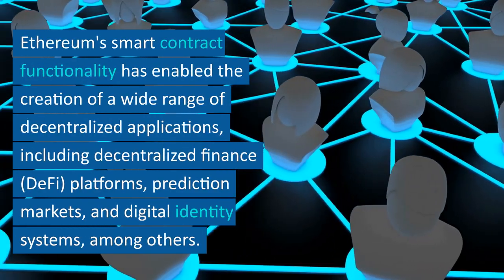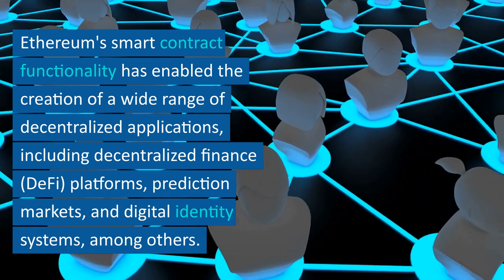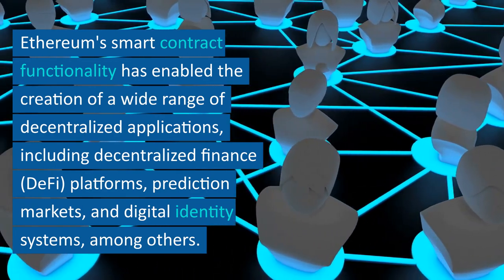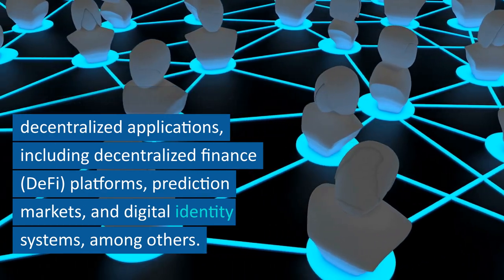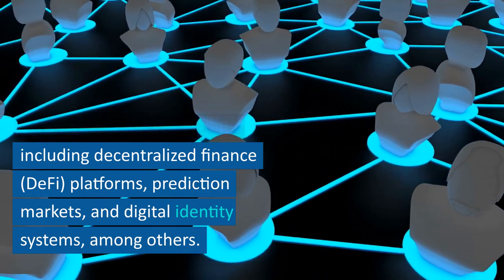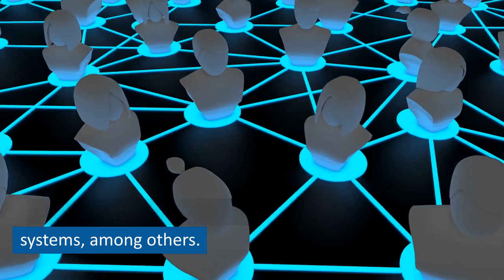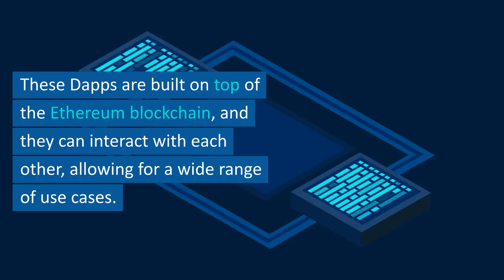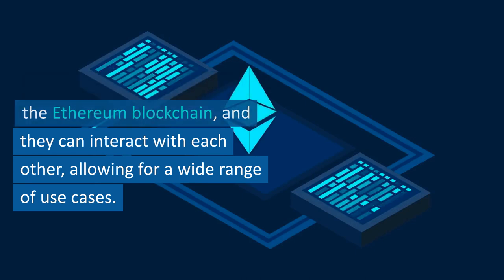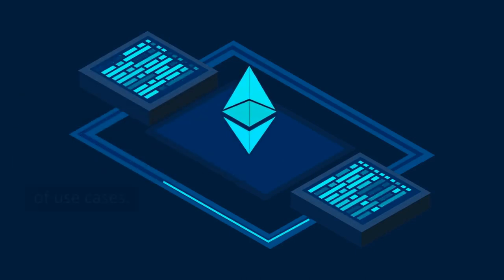Ethereum's smart contract functionality has enabled the creation of a wide range of decentralized applications, including decentralized finance, DeFi, platforms, prediction markets, and digital identity systems, among others. These dApps are built on top of the Ethereum blockchain, and they can interact with each other, allowing for a wide range of use cases.